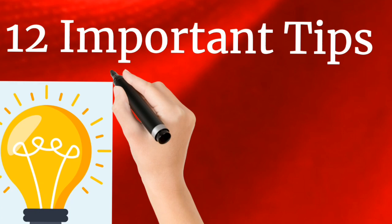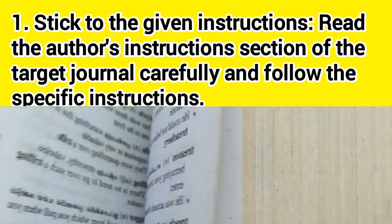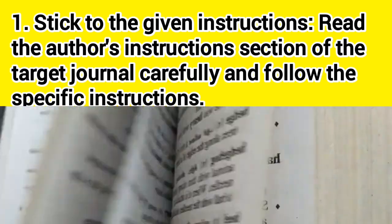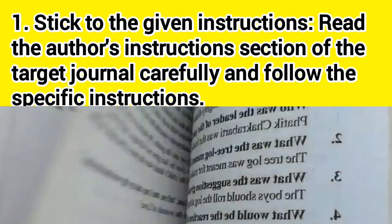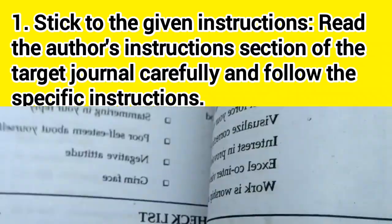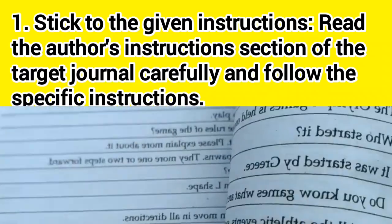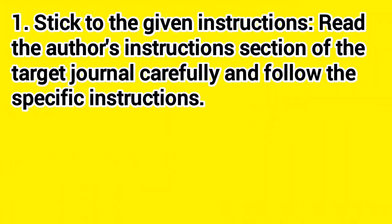Important tips. 1. Stick to the given instructions. Read the author's instructions section of the target journal carefully and follow the specific instructions. For example, the title of the method and materials section of medical research may need to be changed to, patients and method, methods and methods, or method and tools. You may be expected to follow certain standard guidelines such as those set by the APA.